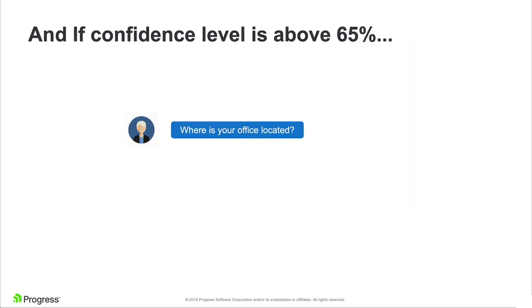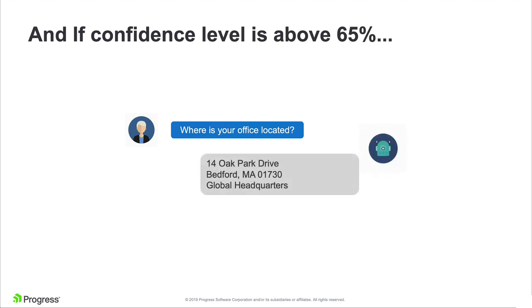If that score is above 65%, the chatbot will respond with an answer — for example, when asking 'Where is your office located?' If the confidence level is below 65%, then the chatbot will respond with something like 'Sorry, I don't know that.' And in a nutshell, this is how NLP works and how chatbots know what you're trying to say and what to tell you in response.